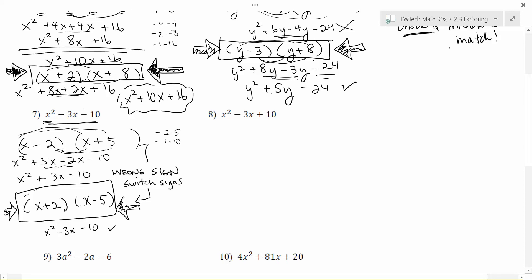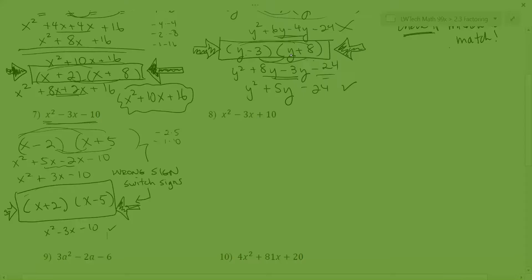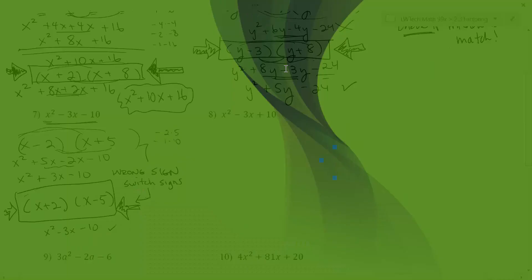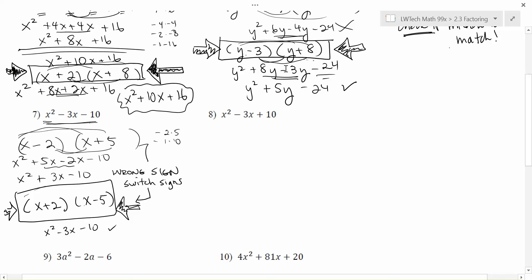Don't stress too much about the signs changing. What you want to do is go ahead and do the work, and if it comes out that the value in the middle is the correct number but the wrong sign, we just switch the signs. So x minus 2 is now going to be x plus 2, and x plus 5 is now going to be x minus 5, and this will be my final solution.